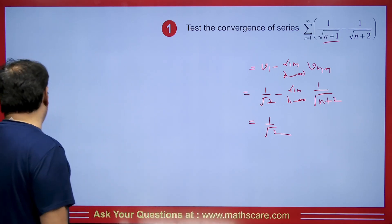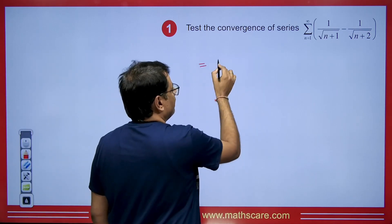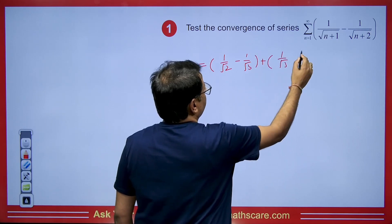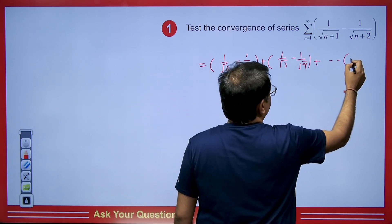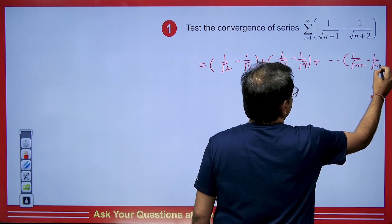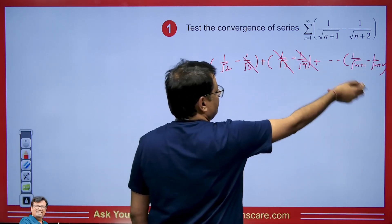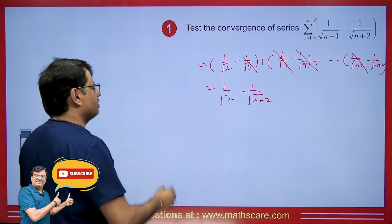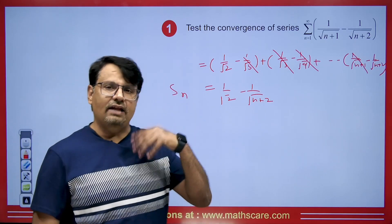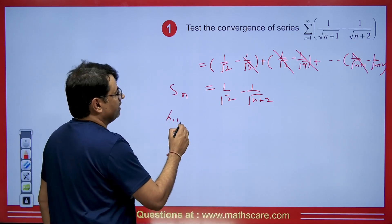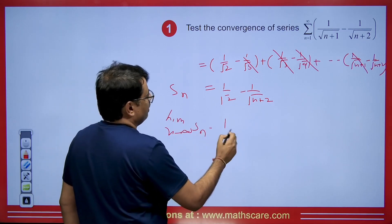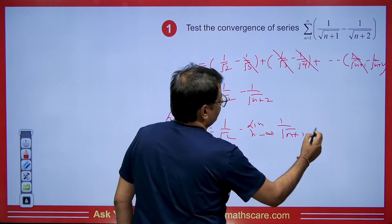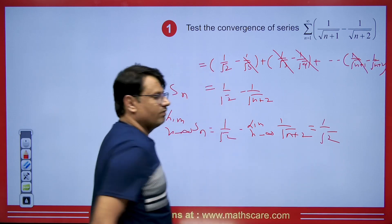If you wish to understand the concept better: putting n = 1 gives 1/√2 − 1/√3, putting n = 2 gives 1/√3 − 1/√4, and so on up to 1/√(n+1) − 1/√(n+2). These middle terms cancel out, leaving 1/√2 − 1/√(n+2). This is the Sₙ, the nth partial sum. Taking the limit as n→∞, the term 1/√(n+2) → 0, so the sum is 1/√2.